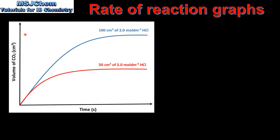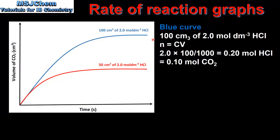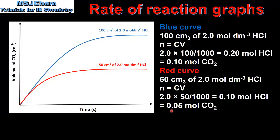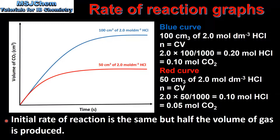In the next graph we again have two curves. For the blue curve we react 100 cm³ of 2 mol per dm³ HCl; for the red curve we react half the volume — 50 cm³ — of the same concentration. The blue curve gives 0.10 moles of CO₂ and the red curve gives 0.05 moles. The blue curve produces twice the volume of gas. The initial rate of reaction is the same for both curves because the same concentration of acid is used. To summarize: the initial rate is the same but half the volume of gas is produced for the red curve.